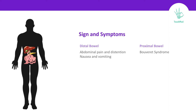Based on the site of obstruction you can come up with signs and symptoms, and we will classify them into distal bowel or proximal bowel. In the distal bowel it gives abdominal pain, distention, nausea, and vomiting. In the proximal bowel it gives us Bouveret syndrome signs and symptoms.